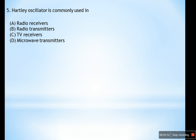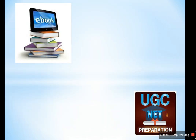Option D — microwave transmitters — operates in the high frequency range, so that is eliminated. From the remaining options, the answer is radio receivers. Hartley oscillators are generally used in radio receivers.